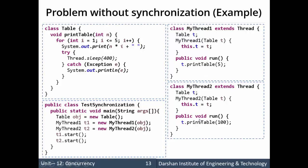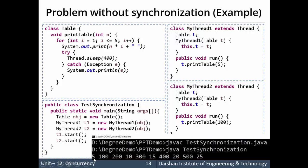There is no synchronization between the two threads. Synchronization means the actual expected output should be: once the multiples of 5 finish printing, then the multiples of 100 should print, or vice versa. If thread one starts first it should complete printing 5, 10, 15, 20, 25, and then thread two should print 100, 200, 300, 400, 500. But the actual output is random — mixed values of 5, 100, 100, 5, 100, 5, etc.